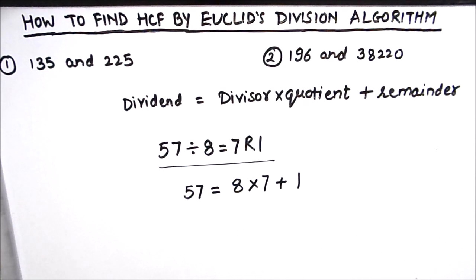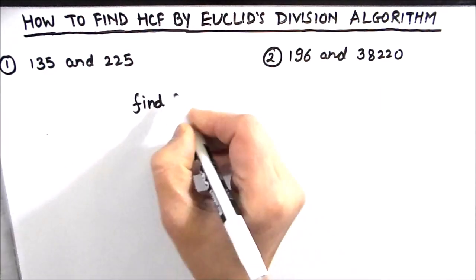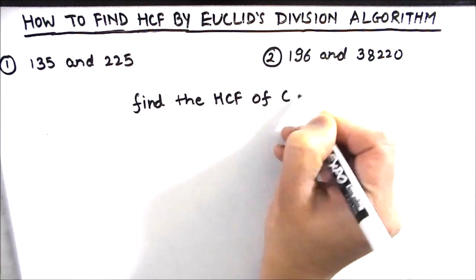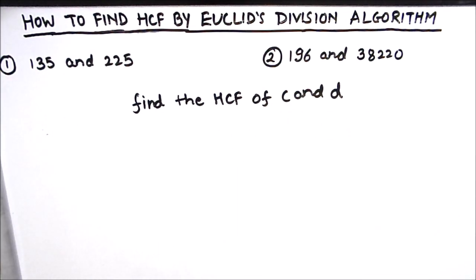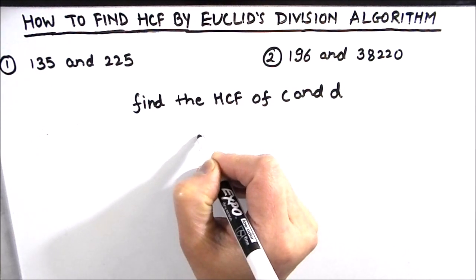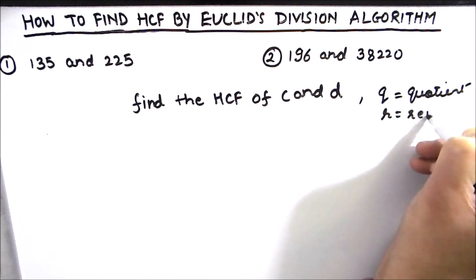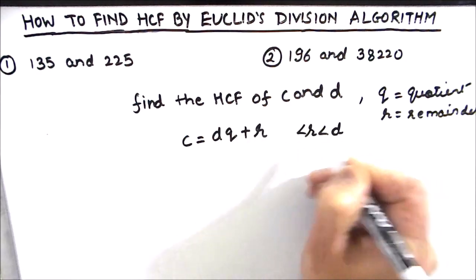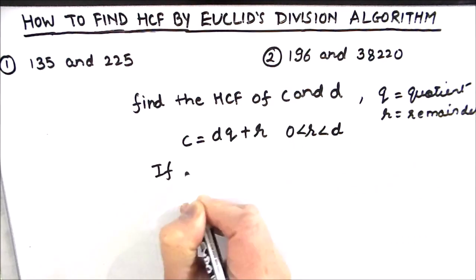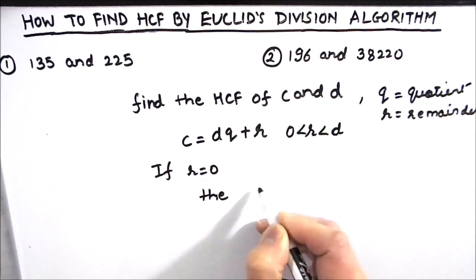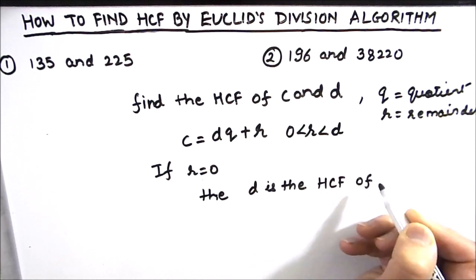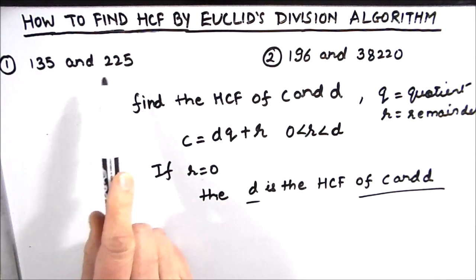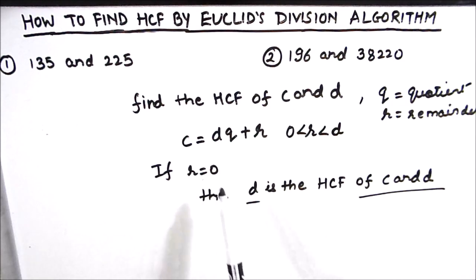Now we come back to finding the HCF using this algorithm. Let us take two numbers C and D whose HCF we need to find. When we apply Euclid's division algorithm to C and D, we get: C = D × Q + R, where R is less than D and greater than or equal to 0. If R equals 0, then D is the HCF. We keep dividing the bigger number by the smaller number until we get remainder 0.